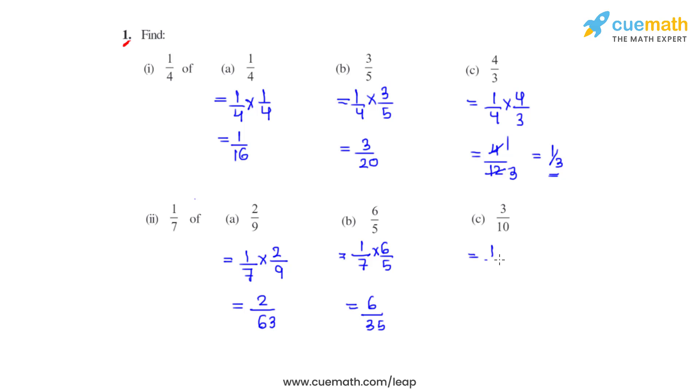Now we have to find 1/7 of 3/10. We again multiply the numerators, we get 3, and multiplying the denominators we get 70.